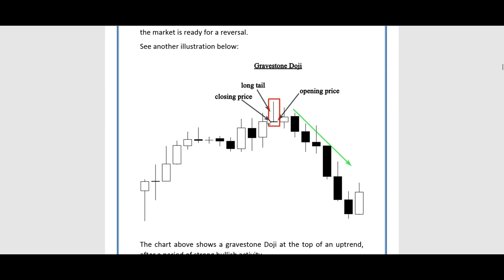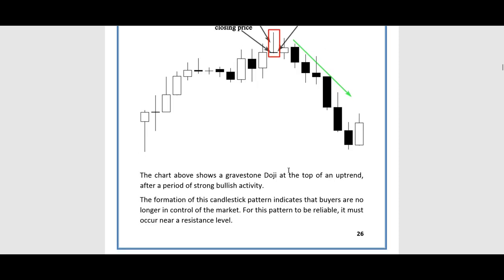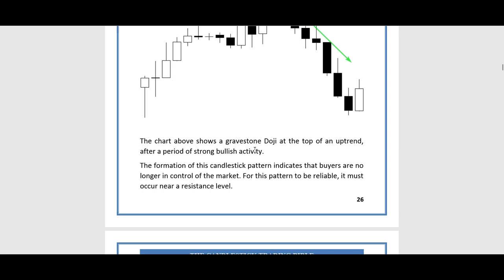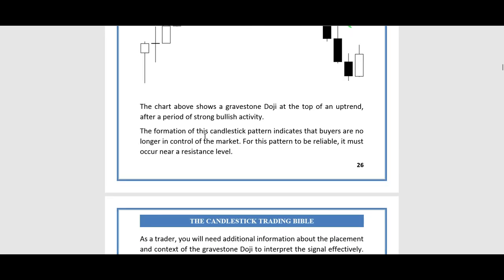Right here we have an impulse move, a retracement, and then a gravestone doji showing us that buyers carried the market all the way up to the high. However, in the same time frame, sellers carry the market back down to the open or close — showing that buyers were up but then lose momentum and sellers close the market back down. This is a reversal signal, and shortly afterwards, we see a reversal.